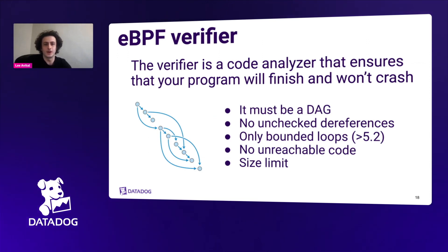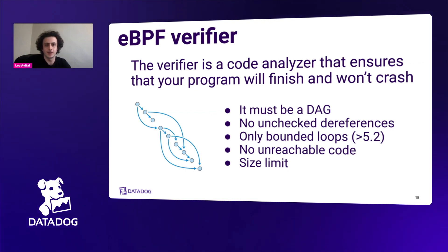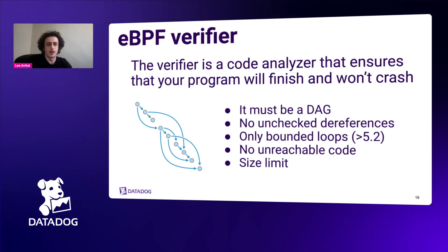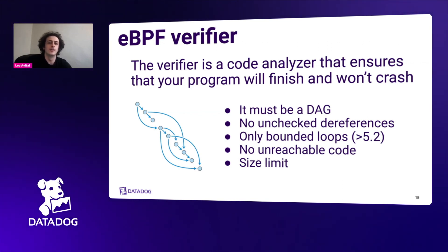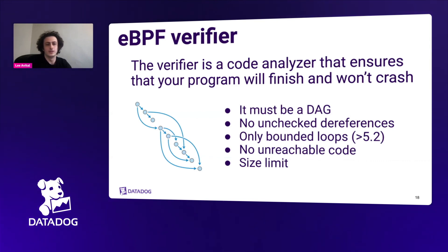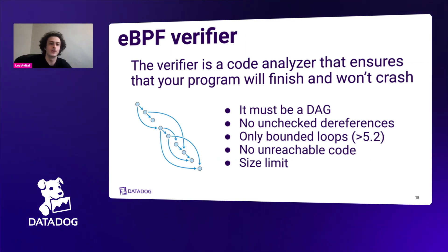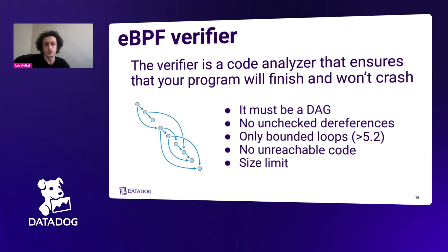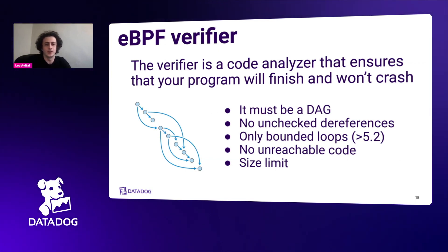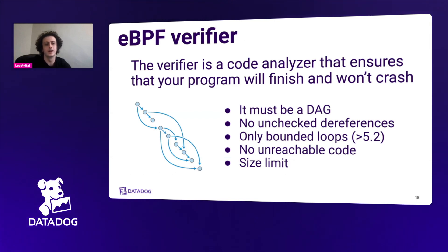The verifier ensures eBPF is safe and won't bring down the system. Programs must meet several criteria: the program must be a DAG (directed acyclic graph), meaning no recursion and no goto; there are no unchecked pointer dereferences; there are no unbounded loops (loops were disallowed before kernel 5.2, and after 5.2 they must be bounded); there is no unreachable code; and code must be within a certain size. All this ensures eBPF programs run at a predictable speed and will not crash your machine.